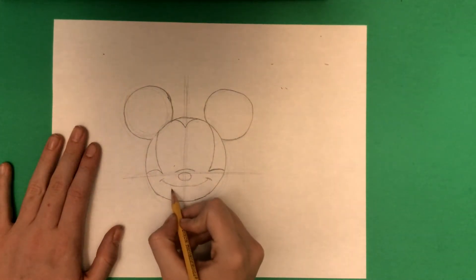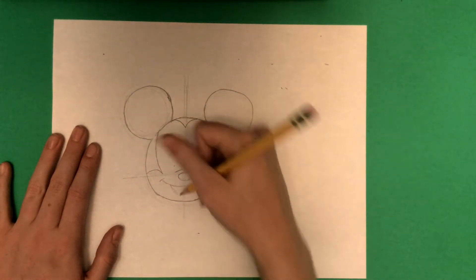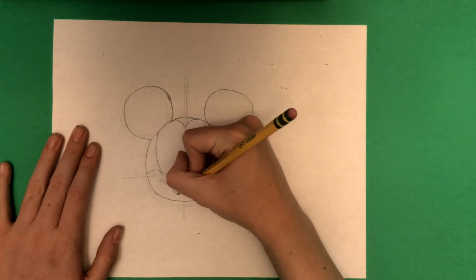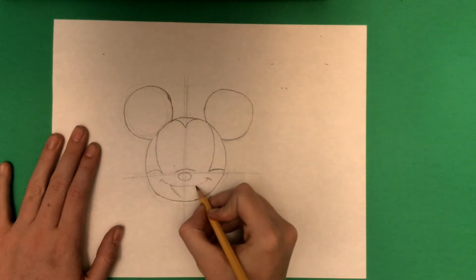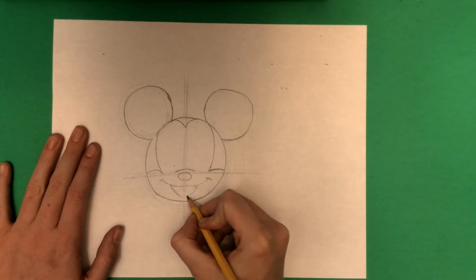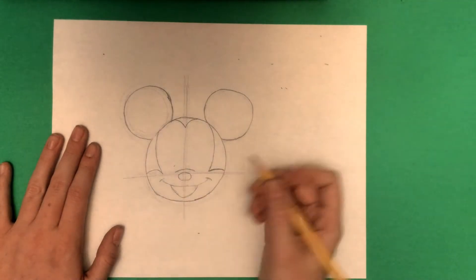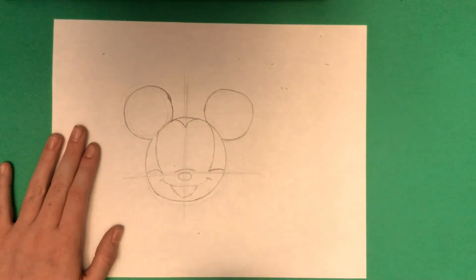After that, you've got to make a big, wide smile because Mickey's super-duper happy all the time. You just darken that in, sort of just like a curve. You can actually make it on the side to make him like sparkling or anything like that.